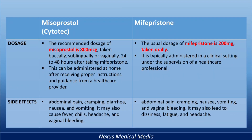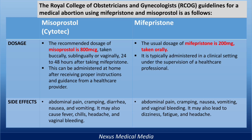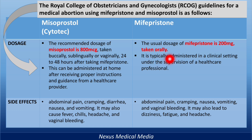Let's talk about dosage. According to the Royal College of Obstetricians and Gynaecologists, this is how you give mifepristone and misoprostol in medical abortion. You start with mifepristone: the usual dosage is 200 milligrams taken orally, typically administered in a clinical setting under the supervision of a healthcare professional.